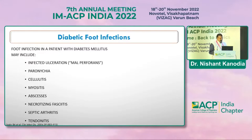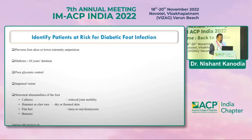Diabetic foot infections may include infective ulcerations, cellulitis, myositis, abscesses, necrotizing fasciitis, septic arthritis, and tendonitis. Risk factors for diabetic foot infection include a history of ten or more years of diabetes, previous foot ulcers or lower extremity amputation, poor glycemic control, impaired vision, and structural abnormalities of the foot such as calluses, hammer or claw toes, flat foot, and bunions.